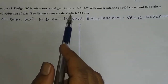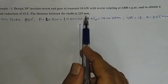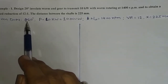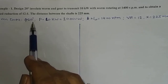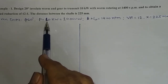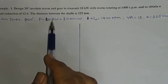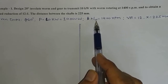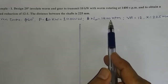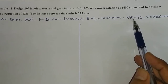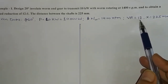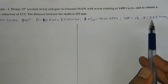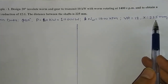The distance between the shafts is 225 mm. Given data: pressure angle φ = 20 degrees, power to be transmitted P = 10 kilowatt = 10,000 watt, speed of worm N_W = 1400 RPM, velocity ratio VR = 12, and center distance x = 225 mm.